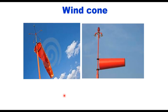Finally, the wind cone is lighted with four or six 200-watt bulbs with reflectors, and these are placed 1.8 meters above the top of the cone. These are the visual aids which are provided to the pilot.